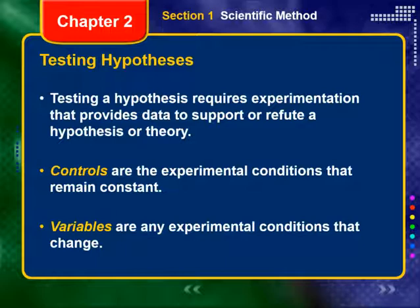Testing a hypothesis requires experimentation that provides data to support or refute a hypothesis or theory. Do the data in the previous figure support the hypothesis? If testing reveals that the predictions were not correct, the generalizations on which the predictions are based must be discarded or modified. One of the most difficult, yet most important, aspects of science is rejecting a hypothesis that is not supported by data.